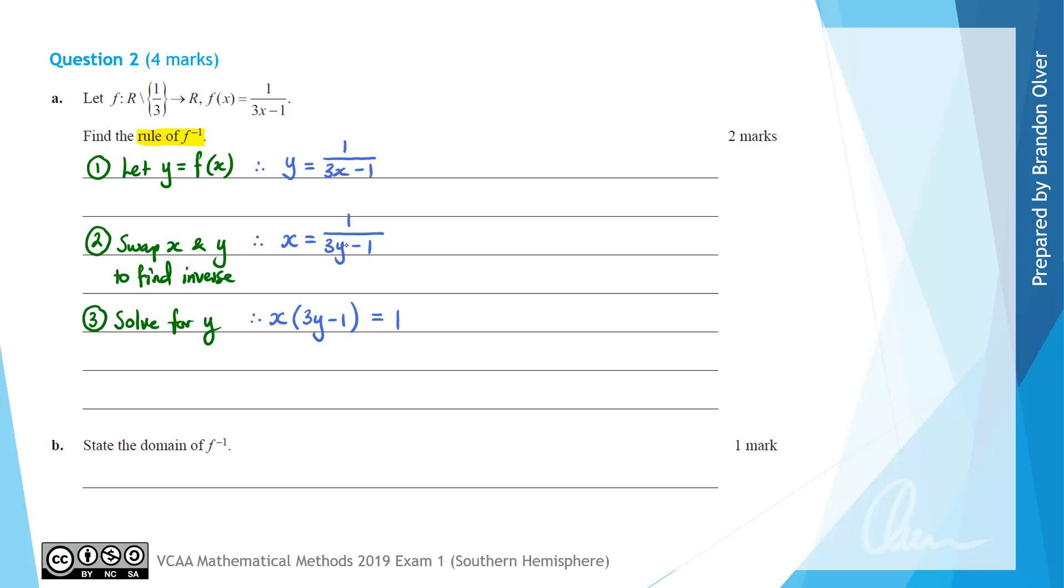All that's going to be left on the right hand side is the top line of that fraction which is 1. The next thing we can do is divide by x, so we'd be left with 3y minus 1 on the left hand side equals 1 divided by x.